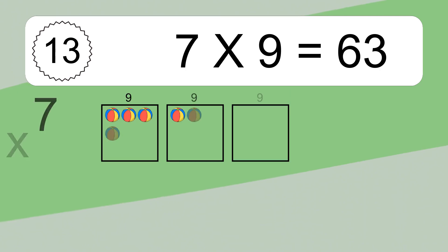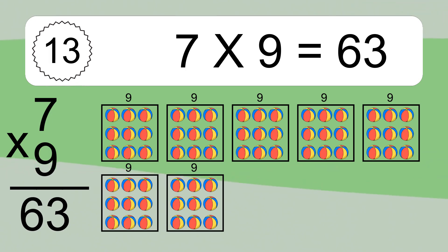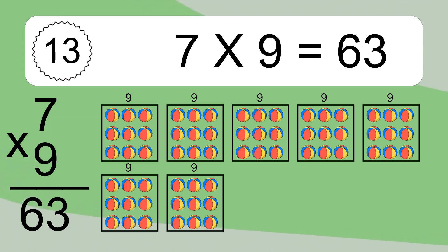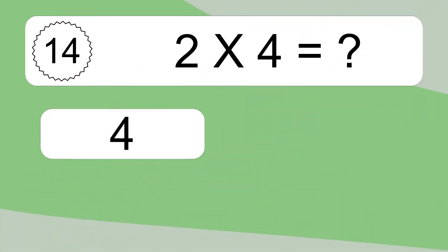Seven times nine equals what? Seven times nine equals 63. We have seven boxes and each box has nine colorful balls inside. If you count all the balls in all the boxes together, you will have seven times nine balls. This equals 63 balls.